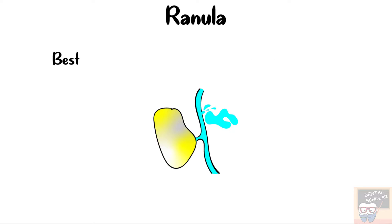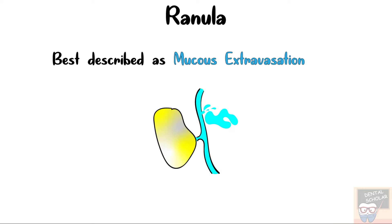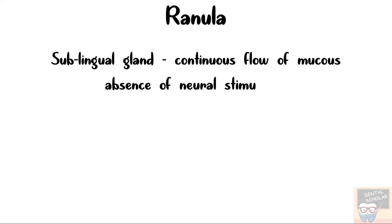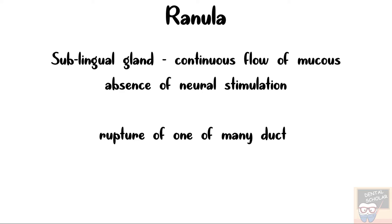A ranula can be best described as a mucus extravasation cyst or mucus escape retention cyst. The sublingual gland is particularly involved with ranula because it produces a continuous flow of mucus even in the absence of neural stimulation, unlike other salivary glands, and this might account for its ability to produce a ranula when one of its multiple ducts are ruptured.